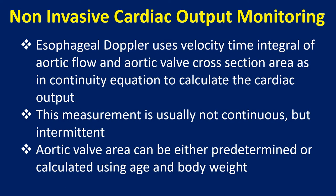Esophageal Doppler uses the velocity time integral of aortic flow and aortic valve cross-section area, as in the continuity equation, to calculate cardiac output. This measurement is usually not continuous but intermittent, and aortic valve area can be either predetermined or calculated using age and body weight.